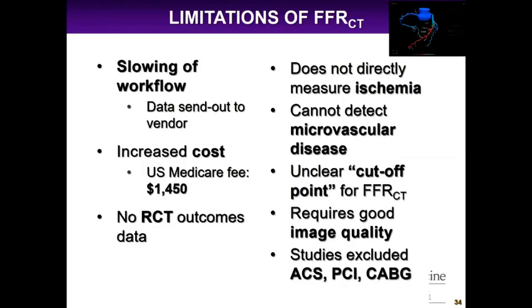Limitations of FFR CT: the analysis takes up to five hours to come back from the vendor. It's also expensive — each study costs $1,500 per US Medicare. There are still no randomized controlled trials to show its efficacy. It's still only an anatomic test despite estimating FFR, so it doesn't directly measure ischemia and cannot detect microvascular disease. There's no clear cutoff point for FFR CT. Studies excluded patients with ACS, stents, and bypass because those vessels are very difficult to see.